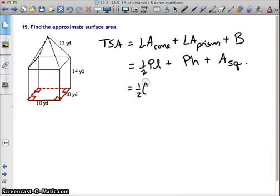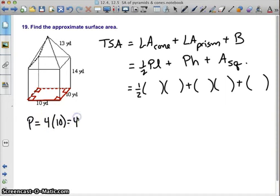We're going to substitute in what we know, and it's also going to help us identify what we need to find. We start with our perimeter of our base. The perimeter of our base is 4 times 10, which is 40 units, actually 40 yards since we're given our units there.